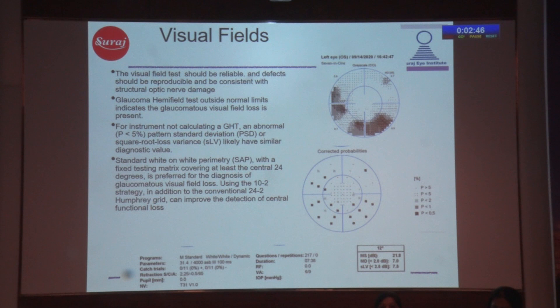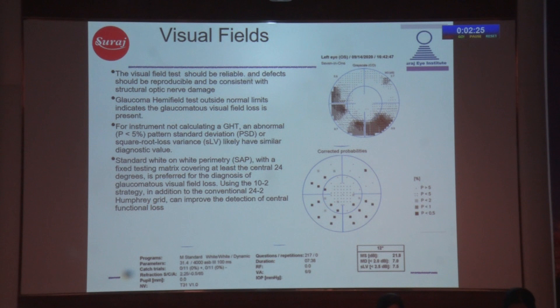As far as visual fields are concerned, they should be reliable, the defect should be reproducible and consistent with structural optic nerve damage, and the glaucoma hemifield test and pattern standard deviation are all important for the diagnosis of glaucoma. Standard white-on-white perimetry is fine, and you should do a central 24-degree field or a 30-degree field, and you should use the 10-2 strategy. This is the 12-degree visual field we use on our Octopus machine — a central area that gives you an impression of how close the visual field loss has gone to the center of the fovea.